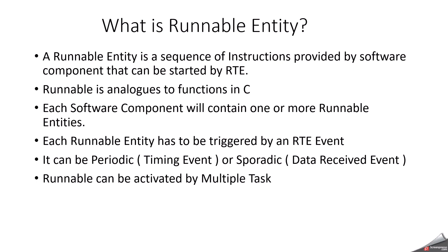Runnable entity can be periodic or sporadic. Periodic means timing event, sporadic means data received event. Runnables can be activated by multiple tasks because every RTE event will be associated with a runnable entity and the event should be mapped with a task. So in that case, task, event, and runnable entity — everything will be tightly coupled.